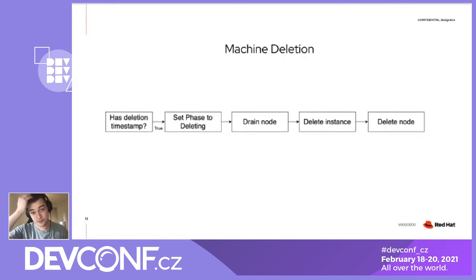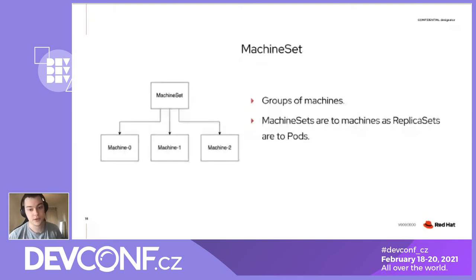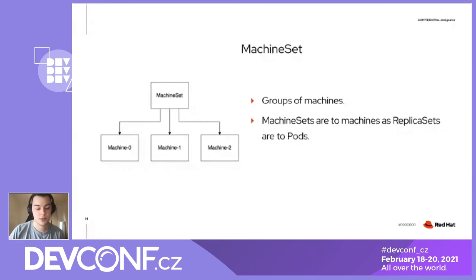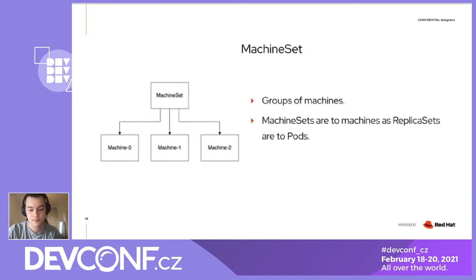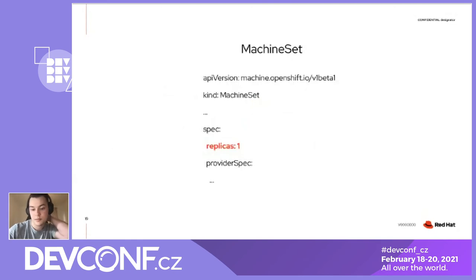That was all about machine objects. Now let's talk about our next resource in Machine API, called machine set. A machine set is just a group of machines. You can think about machine sets like replica sets and pods — machines are not meant to be managed on their own, just like pods, and there are resources that manage them. In our case, machine set manages machines. If you delete a machine that is managed by a machine set, the machine set controller will recreate it, the same way replica sets work with pods. Like replica sets, machine sets need to have a replica count set, and provider specs should be present too.